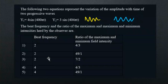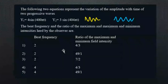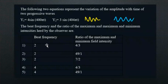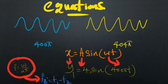In this question, they are asking us to find the maximum intensity and the minimum intensity. We are given two wave equations. To find the beat frequency, we need to find the frequencies of the two waves. Let's look at the equations first.